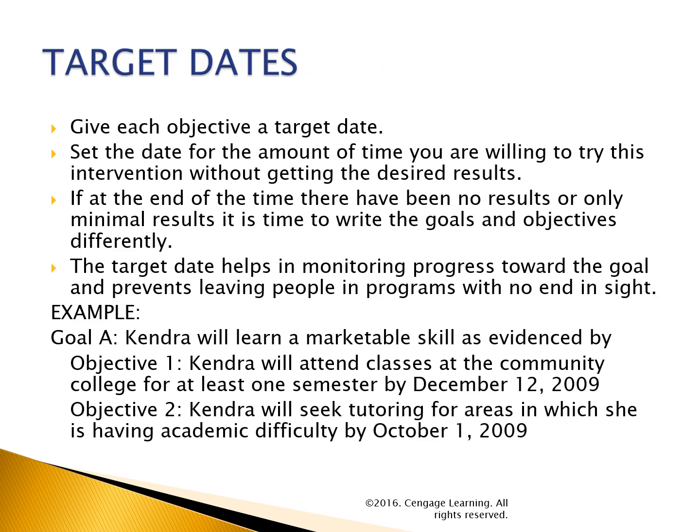Target dates: give each objective a target date. Set the date for the amount of time you are willing to try this intervention without getting the desired result. If at the end of the time there have been no results or only minimal results, it is time to write the goals and objectives differently. The target date helps in monitoring progress toward the end goal and prevents leaving people in programs with no end in sight. Example — Objective 1: Kendra will attend classes at the community college for at least one semester by December 12, 2009. Objective 2: Kendra will seek tutoring for areas in which she is having academic difficulty by October 1, 2009.